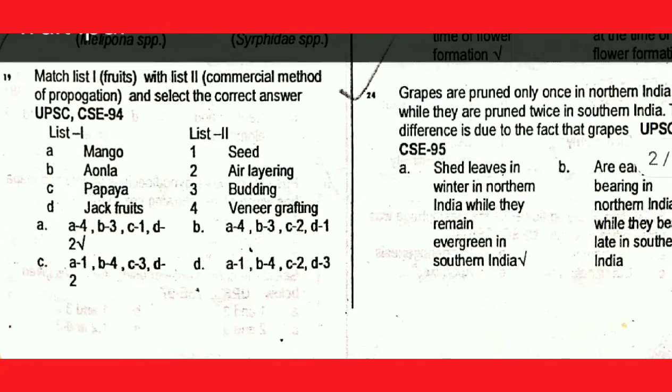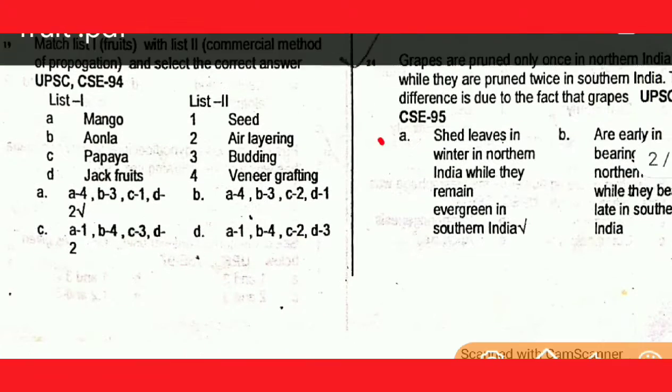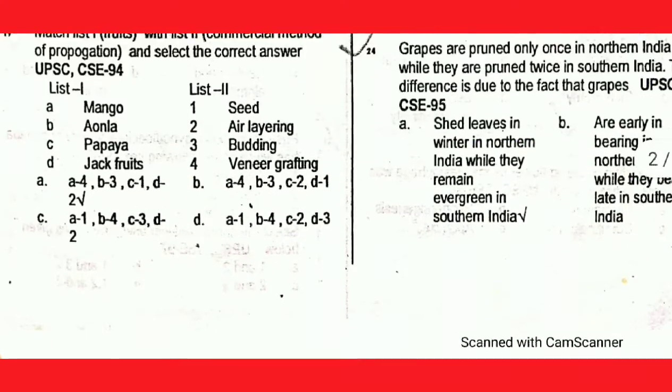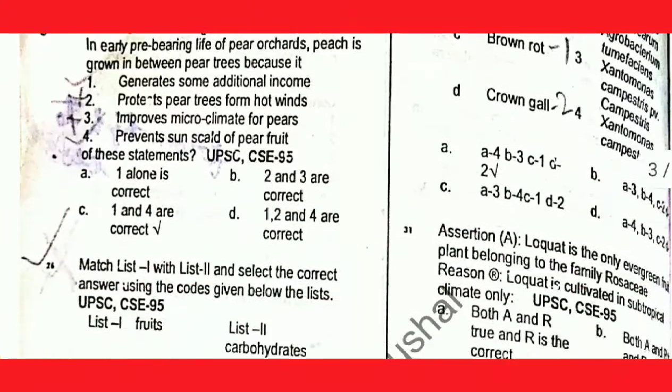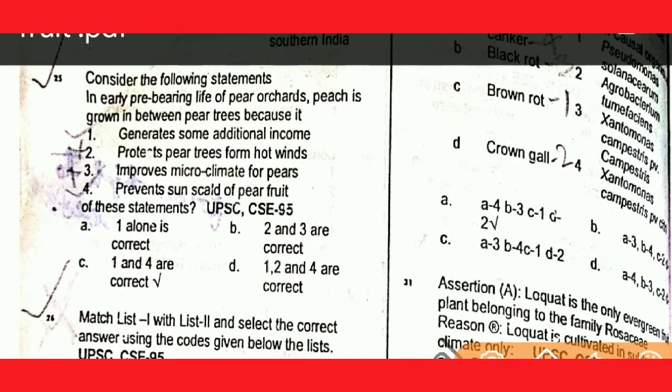This is the correct answer. Next question: consider the following statement — in the early pre-bearing life of a pear orchard, pH is grown in between pear trees. The reason is explained.